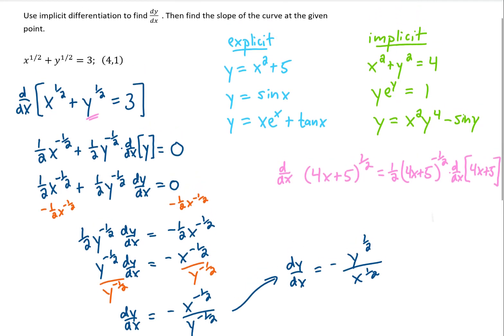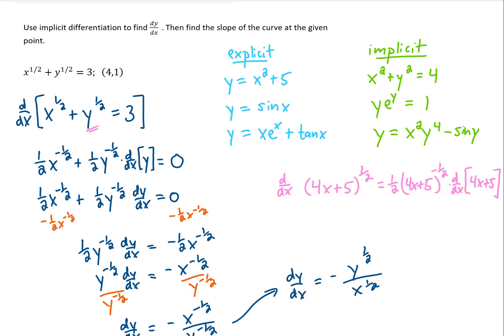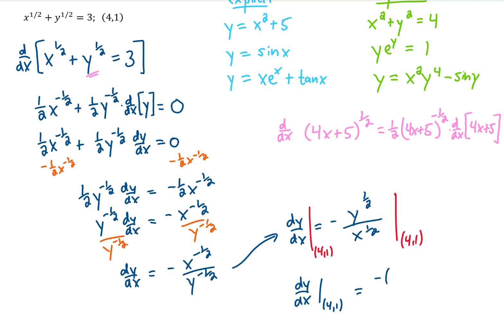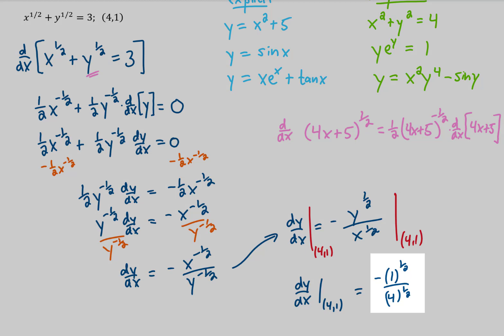And we were actually asked in the original equation to find the slope of the curve at the given point. So we're given a point x = 4, y = 1. So let's plug those in. We get that dy/dx evaluated at the point (4, 1) is this right here.